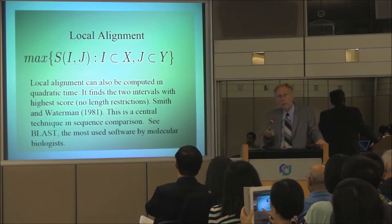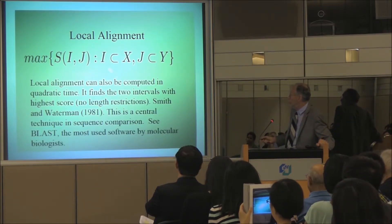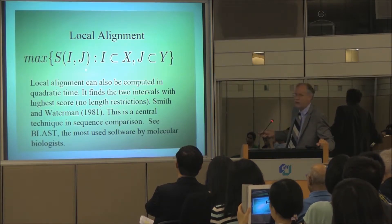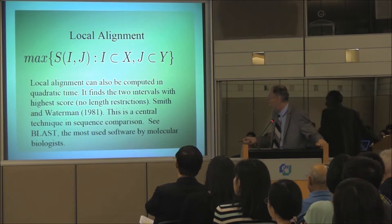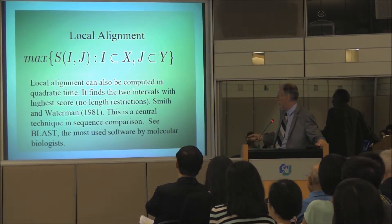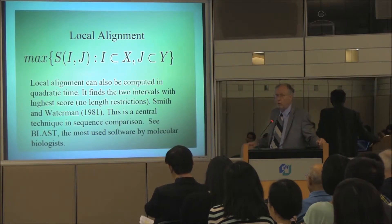Local alignment. Local alignment, which is the modern problem, looks for two pieces of each sequence that has the maximum similarity score. And that goes back to Temple Smith and myself. But it's the underlying motive for BLAST.